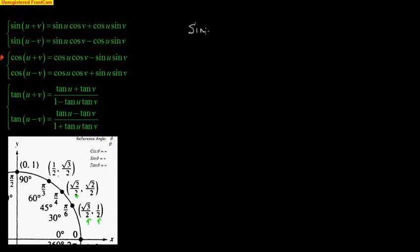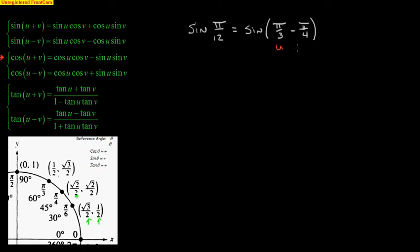Let me scroll over here now and keep the unit circle and formulas handy. Let's do something like the sine of pi over 12 — now we're in radians. How do you figure out what adds up or subtracts to get you pi over 12? That is going to be the sine of pi over 3 minus pi over 4. With a common denominator of 12, that's 4 pi over 12 minus 3 pi over 12, which is 1 pi over 12. So that's your u and that's your v, and we want the sine of u minus v.